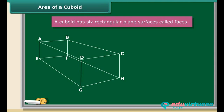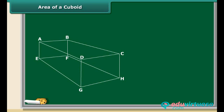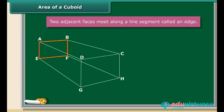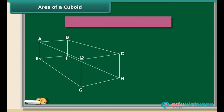A cuboid has 6 rectangular plane surfaces called faces. Two adjacent faces that meet along a line segment are called an edge. A cuboid has 12 edges in all. A cuboid also has 8 corners called vertices.